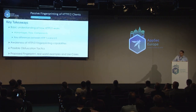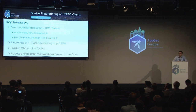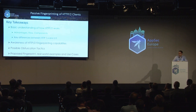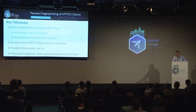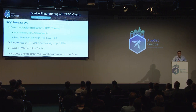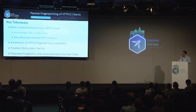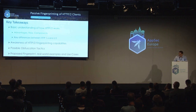Key takeaways: by now you should have a good understanding of how HTTP 2 works, the key advantages of HTTP 2 over 1, the key elements and flow, and the key differences between HTTP 1 and 2. You're also now aware of the fingerprinting capabilities — what data can be exposed about your client when using H2 — with initial concepts of how to obfuscate that. And we covered the proposed fingerprint elements, which ones we chose, which we left out, and some real-world examples and use cases.